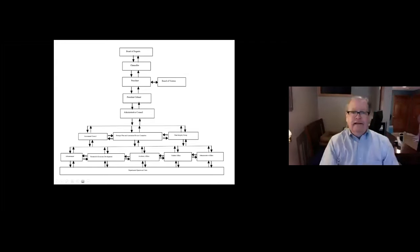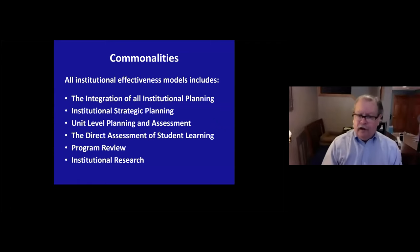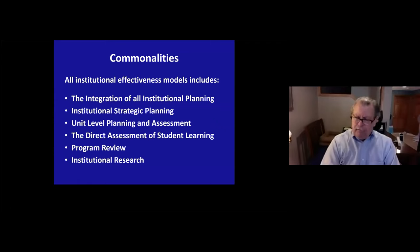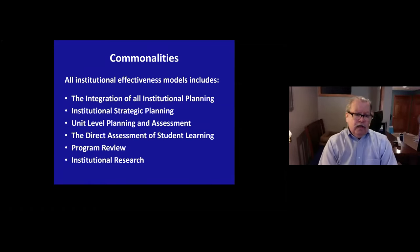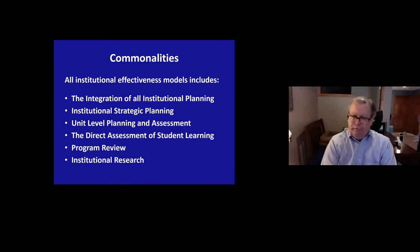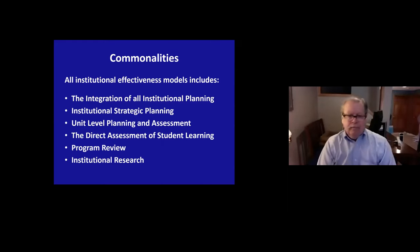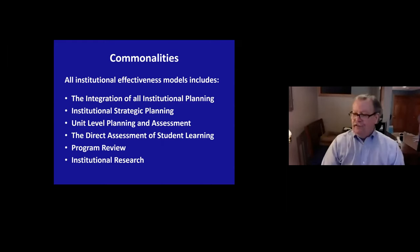What is similar across all the different models? There are certain commonalities. The first is the integration of all institutional planning—we align the organization. Unit plans align with departmental plans, college plans, and the institution's plan. It includes the institution's strategic plan, unit-level planning, assessment for collecting data and performance measures, direct assessment of student learning, program review, and institutional research and use of data. Performance measures close the loop. That, in a brief summary, is institutional effectiveness.